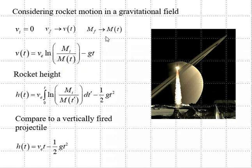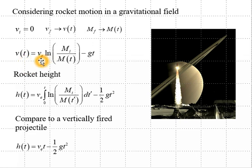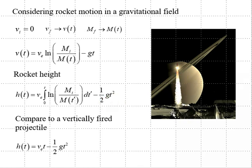Next, we consider rocket motion in a gravitational field, taking the initial speed at launch equal to zero. The final speed and final mass are functions of time. The speed as a function of time is the exhaust speed times the logarithm of the ratio of initial mass to mass at time t, minus gt because we are in a gravitational field — similar to a rocket launch from one of Saturn's moons, where g differs depending on the moon. The rocket height is obtained by integrating V with respect to time, and gt integrates to minus one-half gt squared.